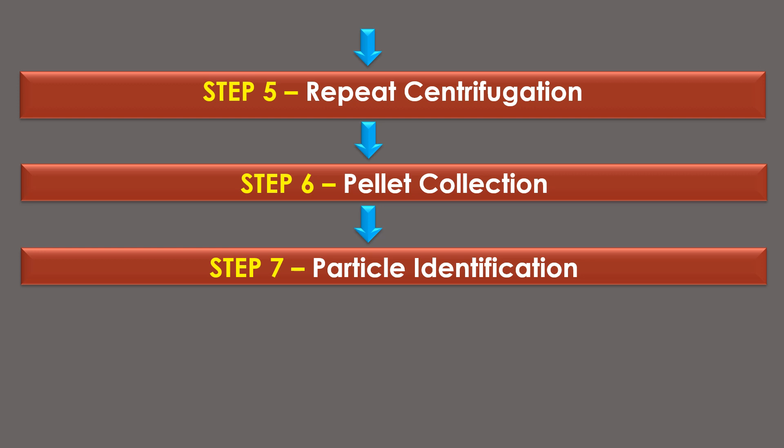Step 5 is repeat centrifugation: the transferred supernatant is subjected to another round of centrifugation, but at a different centrifugal force, duration, and temperature. This step is aimed at separating the next fraction of particles based on size and density differences. Step 6 is pellet collection: after each centrifugation step, a new pellet forms at the bottom of the tube and the supernatant is once again collected. This process is repeated multiple times, with each subsequent centrifugation step separating particles of decreasing size and density.